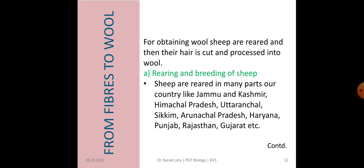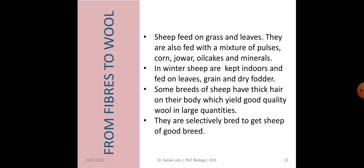These sheep are kept for obtaining wool and are fed on grass and leaves. Along with grass and leaves, they are also fed with a mixture of pulses, corn, jowar, oil cakes, and minerals. In winter, sheep are kept indoors and fed on leaves, grains, and dry fodder. Some breeds of sheep have very thick hair on their body — these breeds yield good quantity and good quality wool. So they are selectively bred to get sheep of good breed.